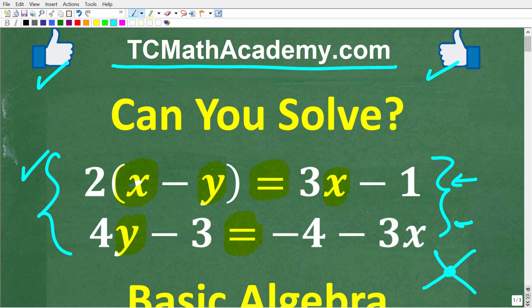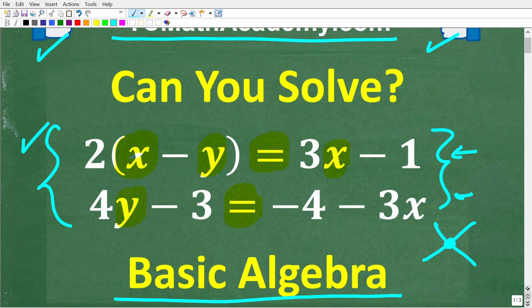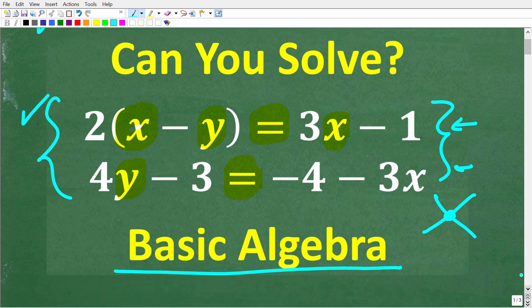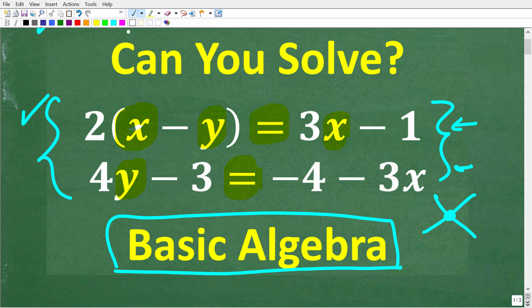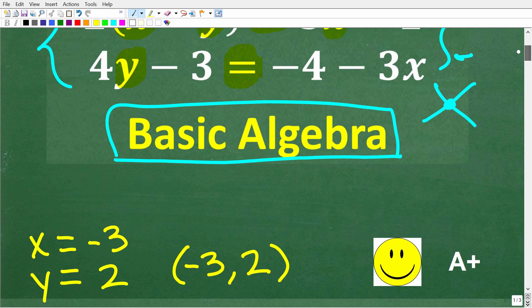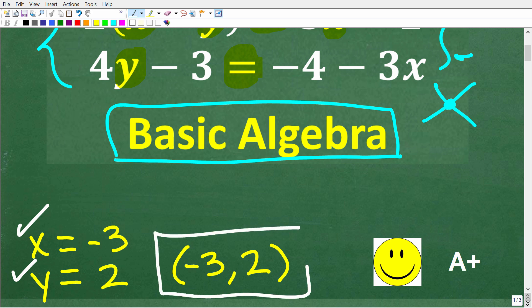So once again, we have a two-variable linear system, and you study this type of stuff in a basic algebra course, even as early as pre-algebra. Hopefully you remember how to solve this problem. The correct answer is: x is equal to negative 3 and y is equal to 2. We could also express this as the coordinate (negative 3, 2).